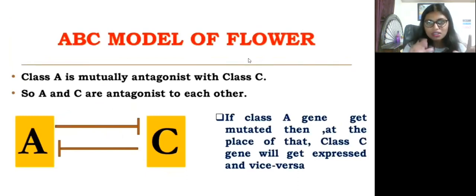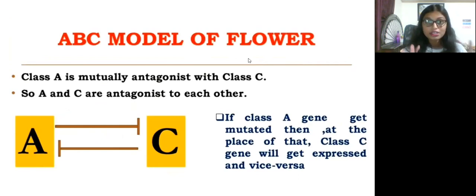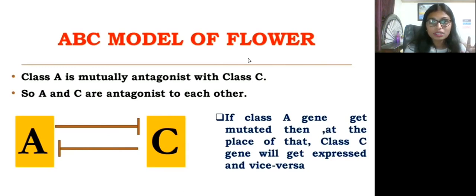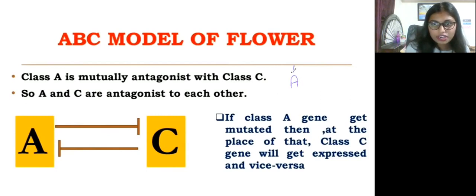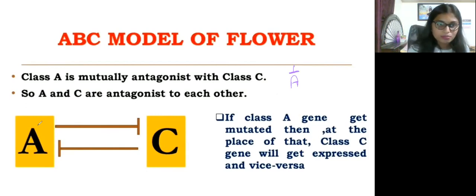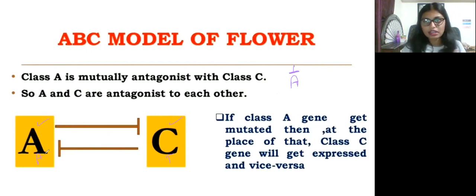Now some mutations take place in this ABC model of flowering. Before discussing mutations, note that Class A and Class C genes are mutually antagonistic. If Class A is mutated, Class C is expressed in the place of A. If Class C is mutated, Class A is expressed in the place of C — and vice versa. Both A and C are mutually antagonistic to each other.